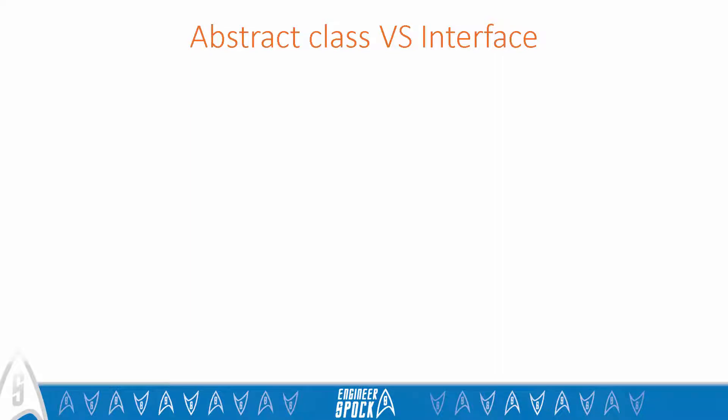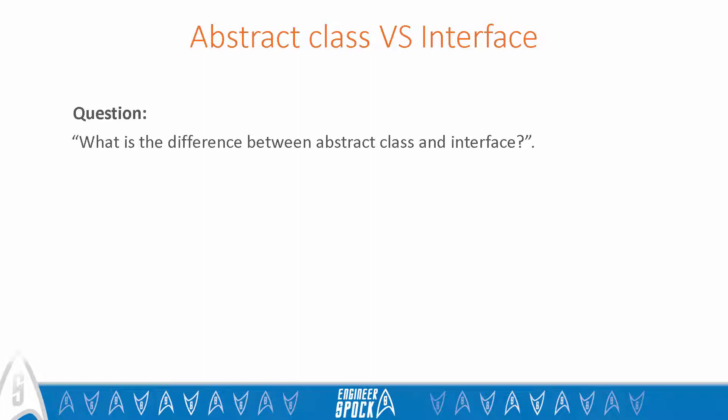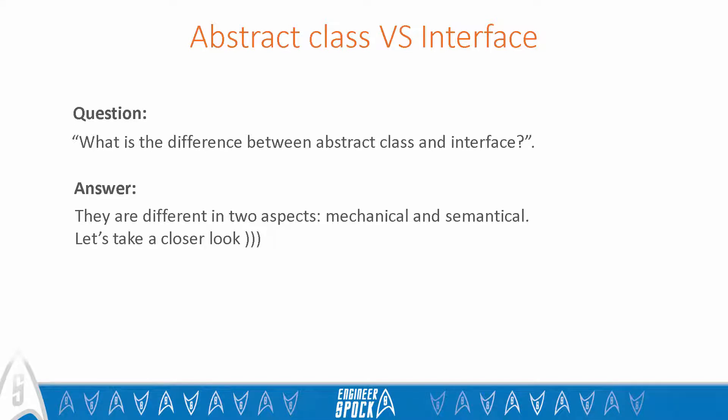The majority of experienced C# developers think that they understand the difference between an abstract class and an interface very well. But when I ask a developer to explain the difference, I hear almost always the same answer which explains only the mechanical difference between the two concepts. However, there is a deeper semantical difference between them. Let's consider the mechanical and semantic difference between abstract classes and interfaces one by one.